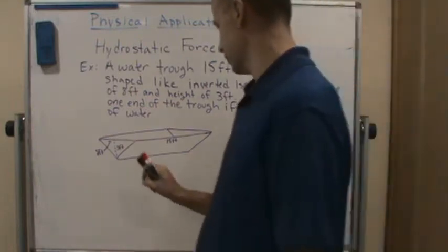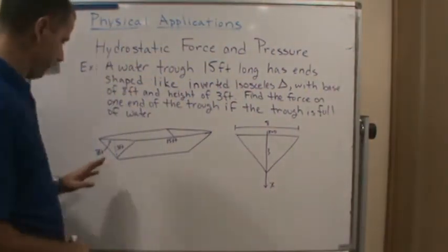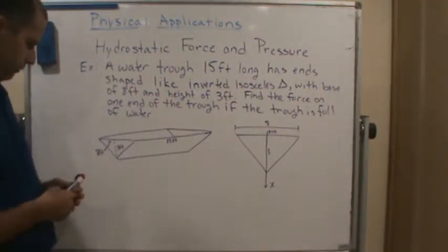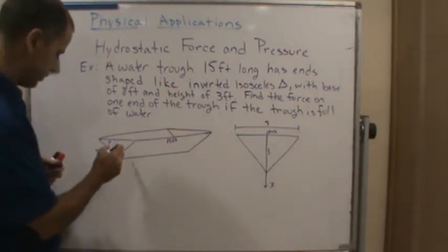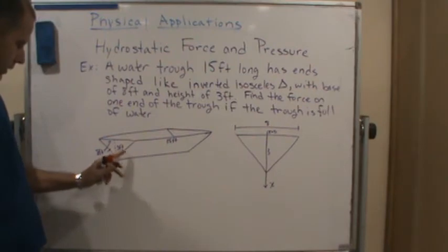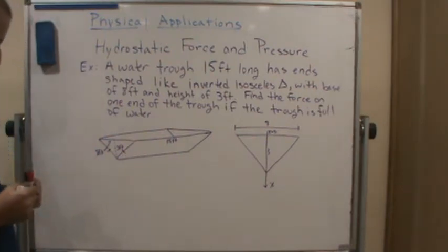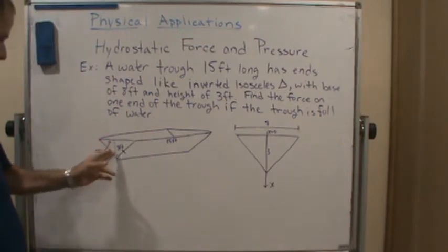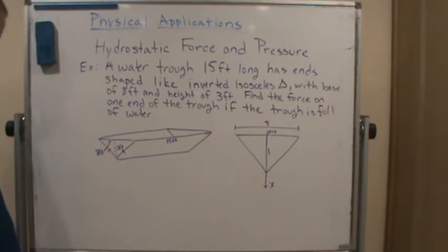So I drew a picture here of the trough. This is what we have, right? We have an inverted isosceles triangle for the base, so we know that these two sides are the same because it's an isosceles triangle. And so we know that the height of this triangle is 3 feet and the base is 8 feet.